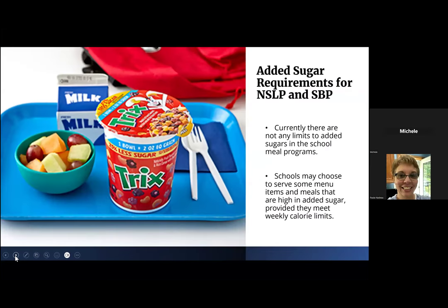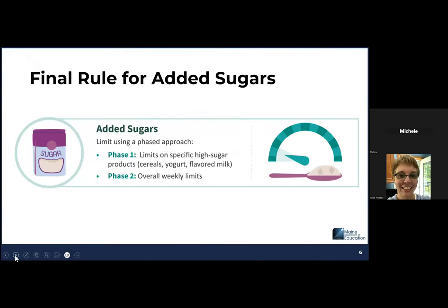Added sugar requirements for National School Lunch Program and School Breakfast Program: Currently, there are not any limits to added sugars in the school meal programs. Schools may choose to serve some menu items and meals that are higher in added sugar, provided that they meet the weekly calorie limits. However, the final rule for added sugars is going to have two phases.